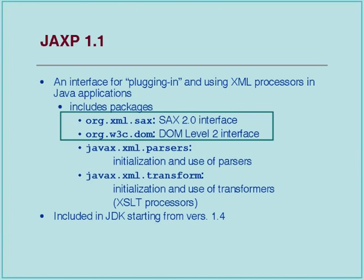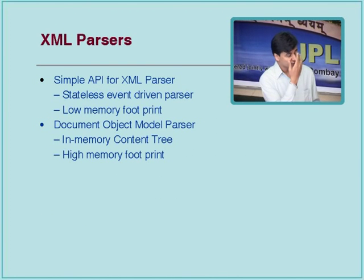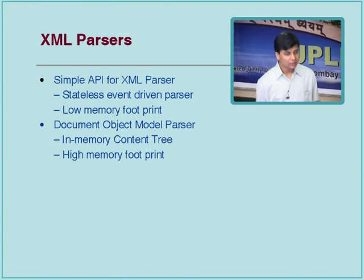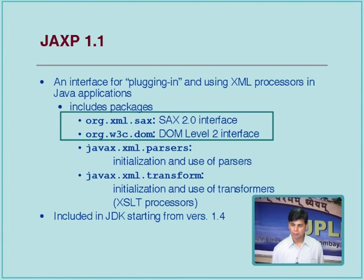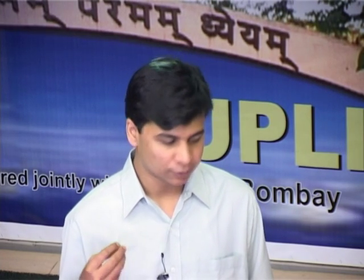JAXP is a pluggable architecture for XML parsing. The SAX API and DOM API are W3C standards and any vendor can provide a reference implementation. That means you can use any DOM or SAX implementation and plug it in without having to recompile your code. It also wraps transformation APIs so you can use any XSLT transformer, like one provided by Apache, and plug it in without recompiling. This JAXP package has been included in standard JDK from version 1.4 onwards.